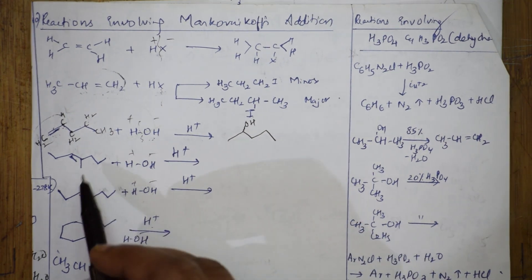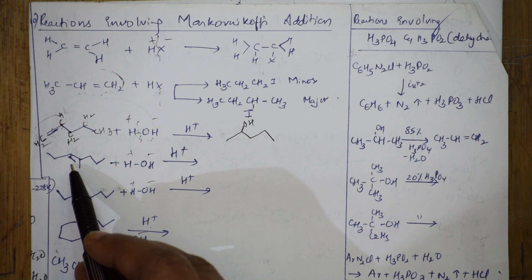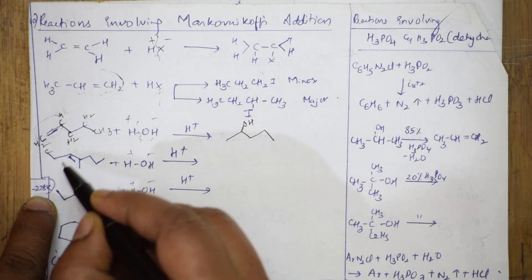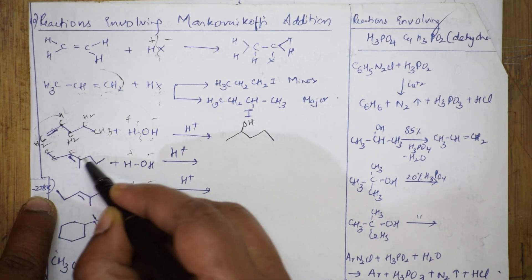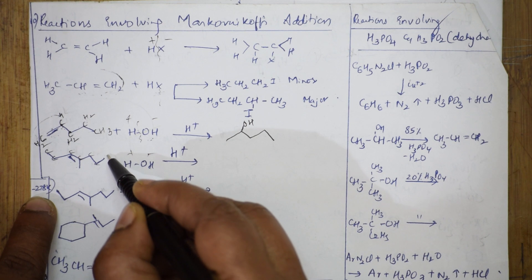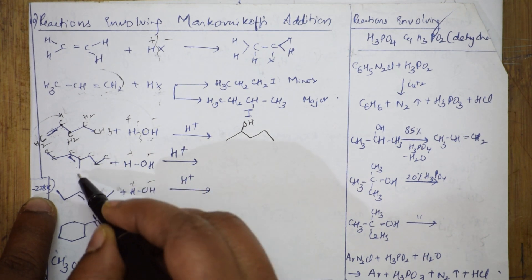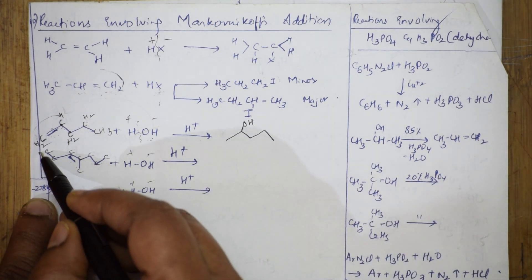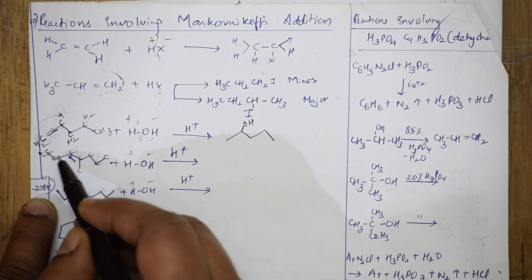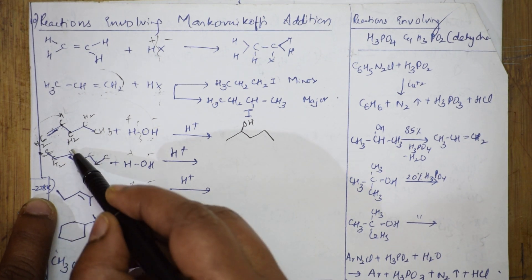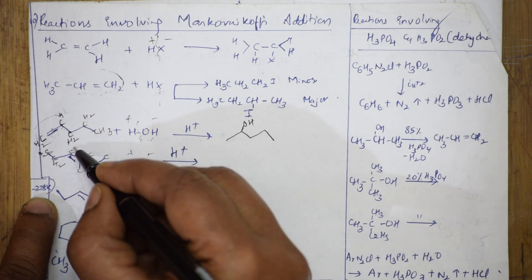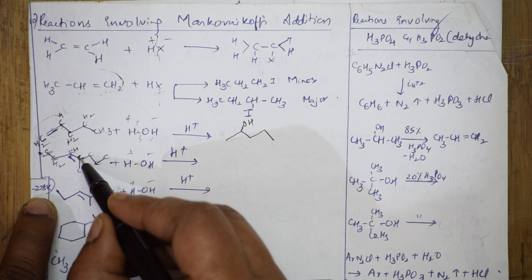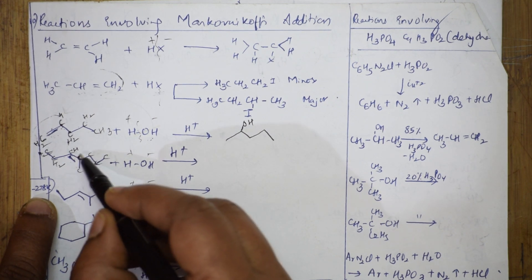Next, let us see this bond line structure. This is also an alkene. Fill the carbons: one, two, three, four, five, six, seven — and there is also one substituent carbon. Fill the hydrogens: first carbon CH₂, second CH₂, third carbon has four bonds so no hydrogens, fourth carbon one hydrogen, fifth carbon CH₂, sixth CH₂, seventh CH₃. The carbon with no hydrogens is the one around the double bond.